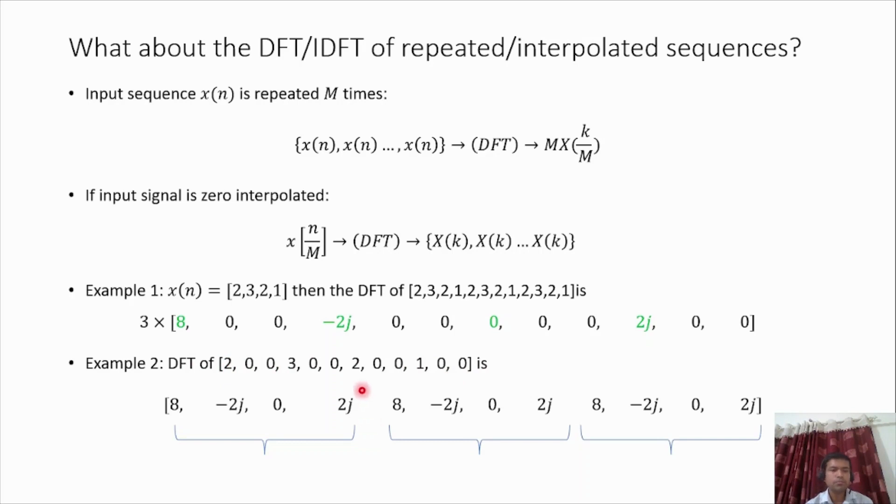What happens is the DFT is again [8, -2j, 0, 2j], but as we have two zeros interpolated here, the spectrum becomes three times. The time domain signal is expanded three times, so the spectrum also becomes threefold.